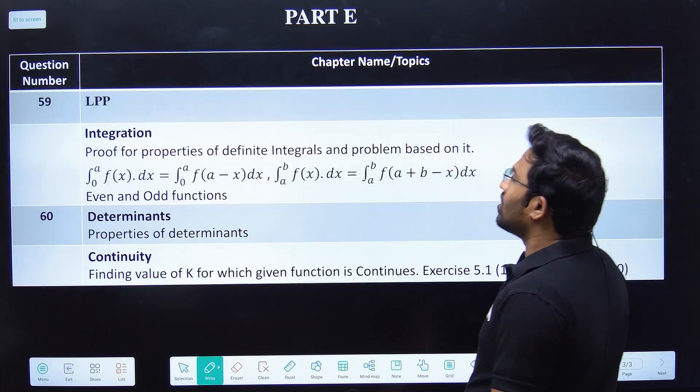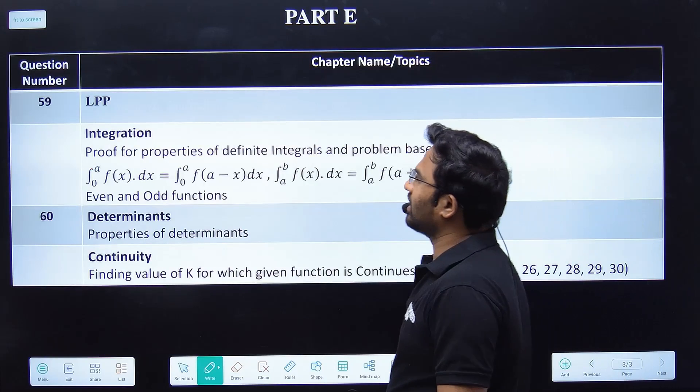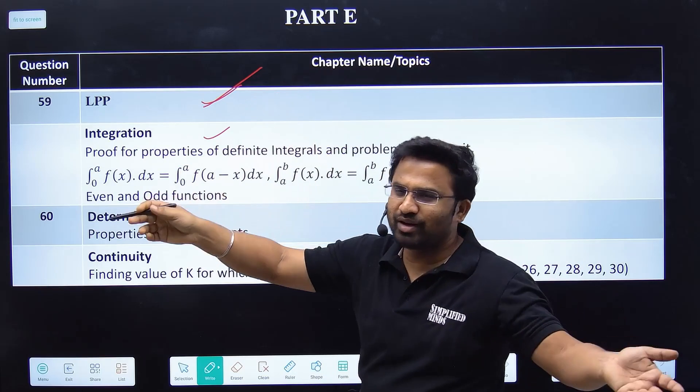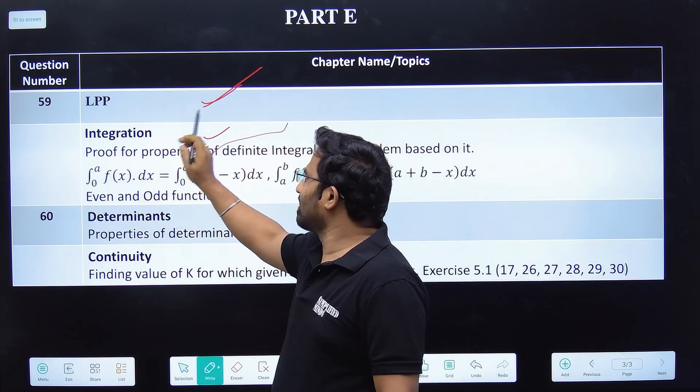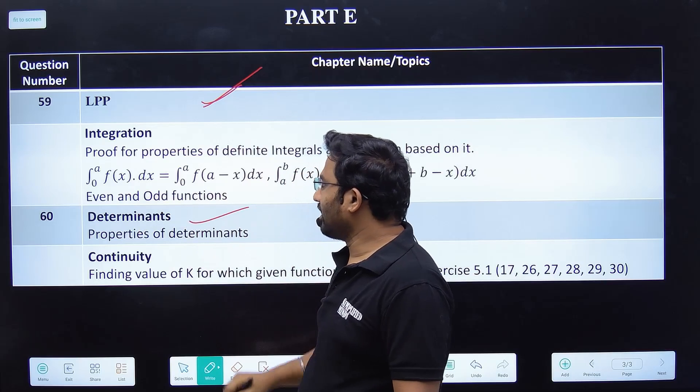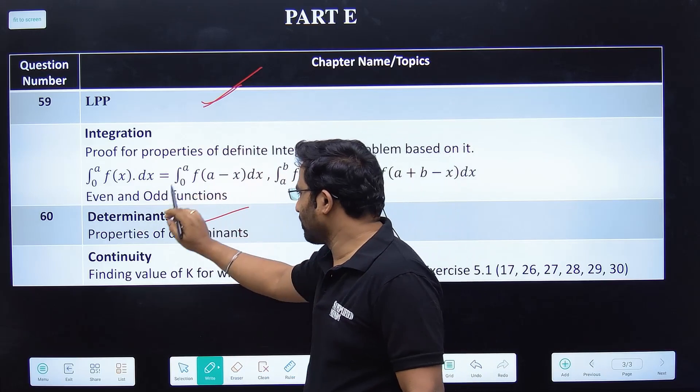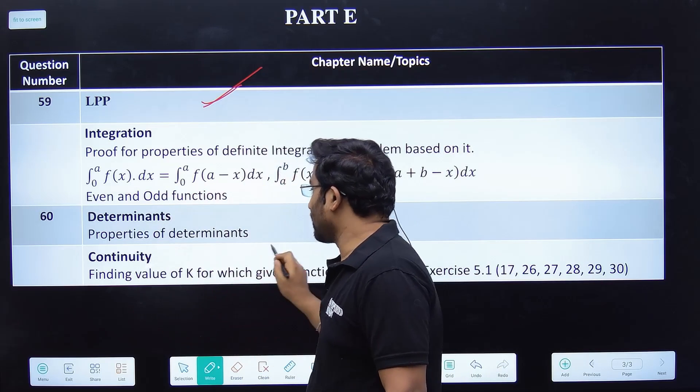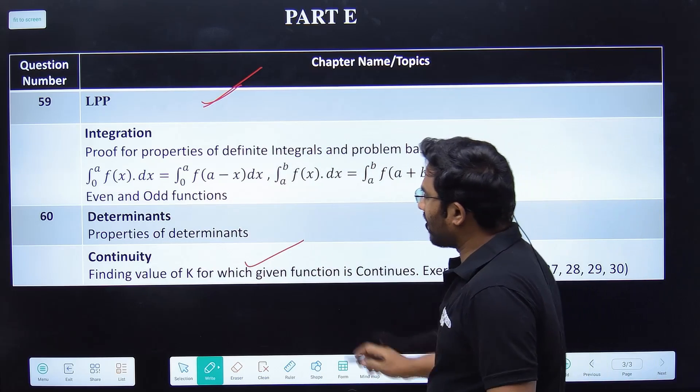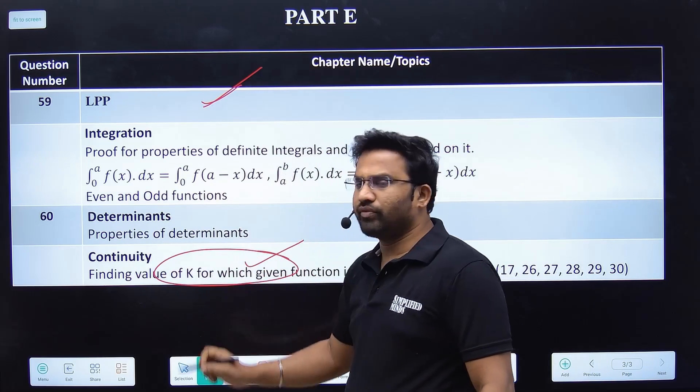Now Part E. Part E is very easy. LPP - you don't have to worry. You can choose Integration, completely all right. Either of them. Coming to Determinants - properties of determinants - again you don't have to choose, you can always choose this. It's very easy.